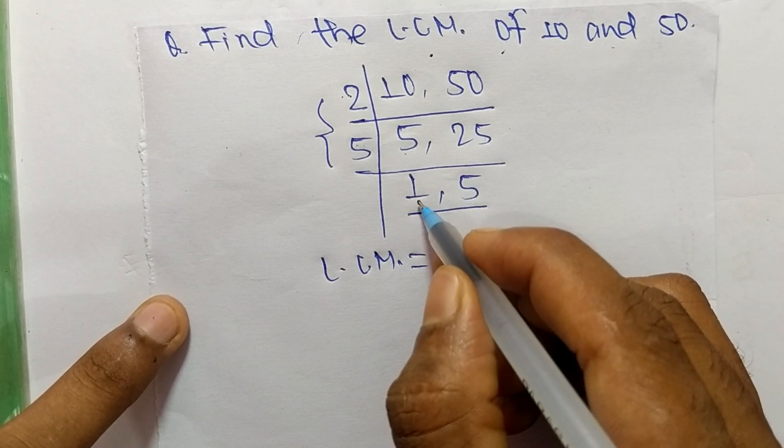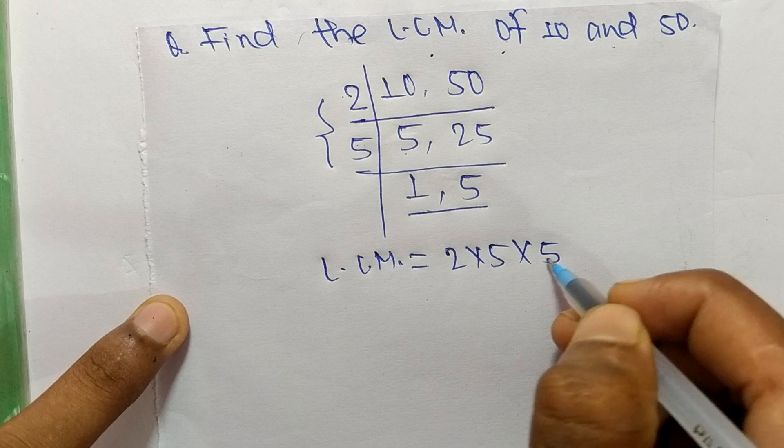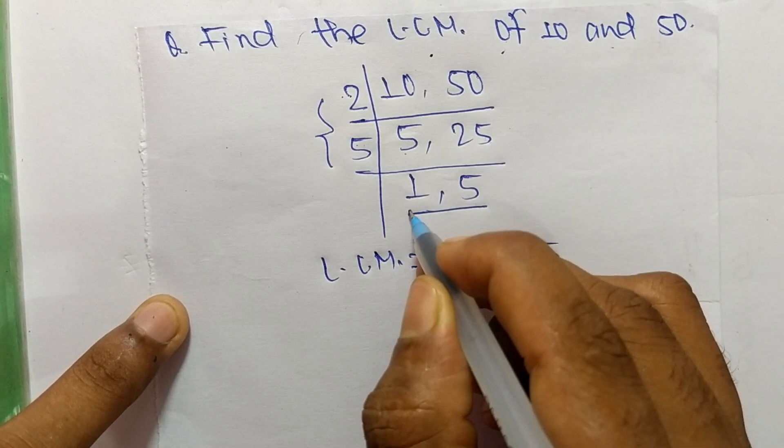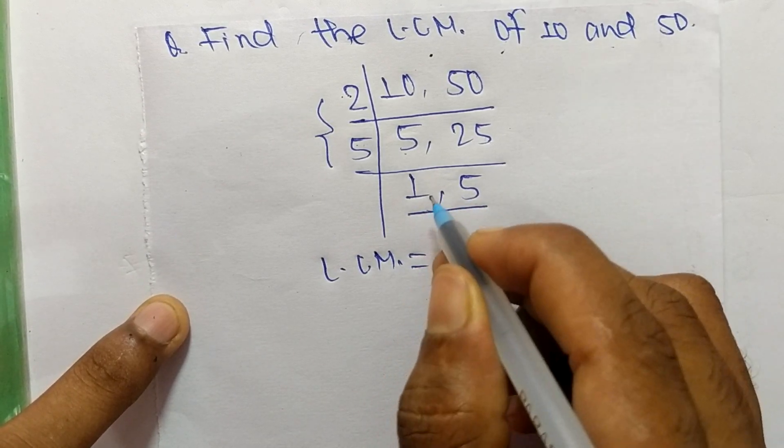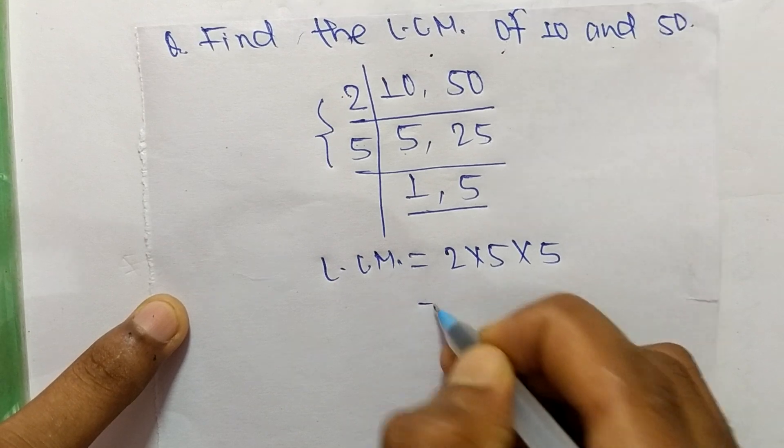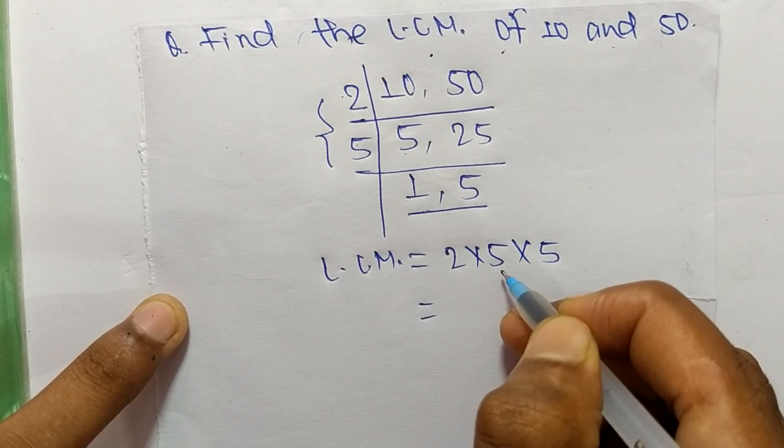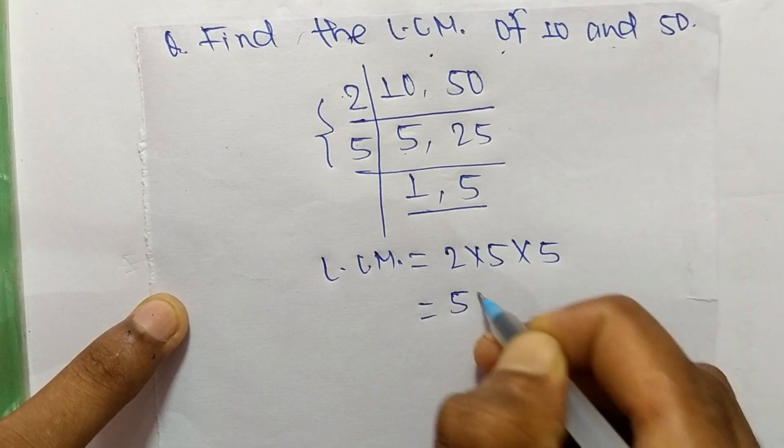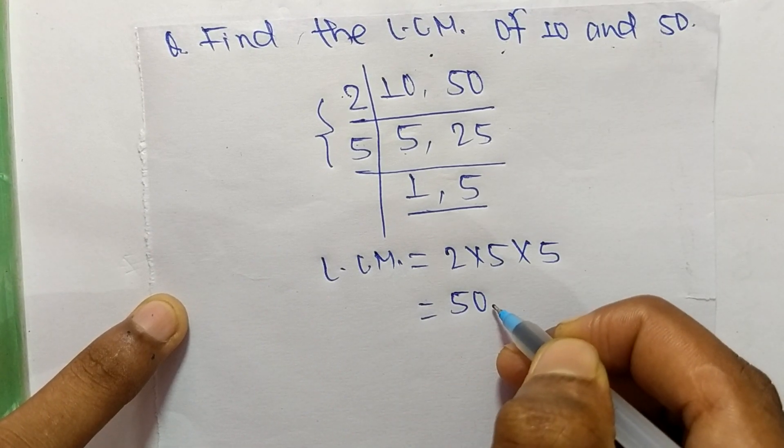We neglect 1 because by multiplying any number with 1 we get the same result. So now 2 times 5 means 10, and 10 times 5 means it is 50.